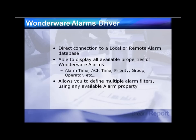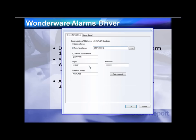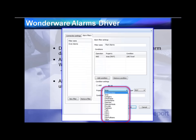The Wonderware alarms driver provides direct connection into any local or remote alarm database, displaying all available properties of alarms and events. You can pre-configure multiple alarm filters — for example, high-priority reactor alarms — by filtering by alarm group, duration, area, or operator, then creating a logical expression such as alarm group containing 'ovens.' These filters are then selectable when configuring a report.